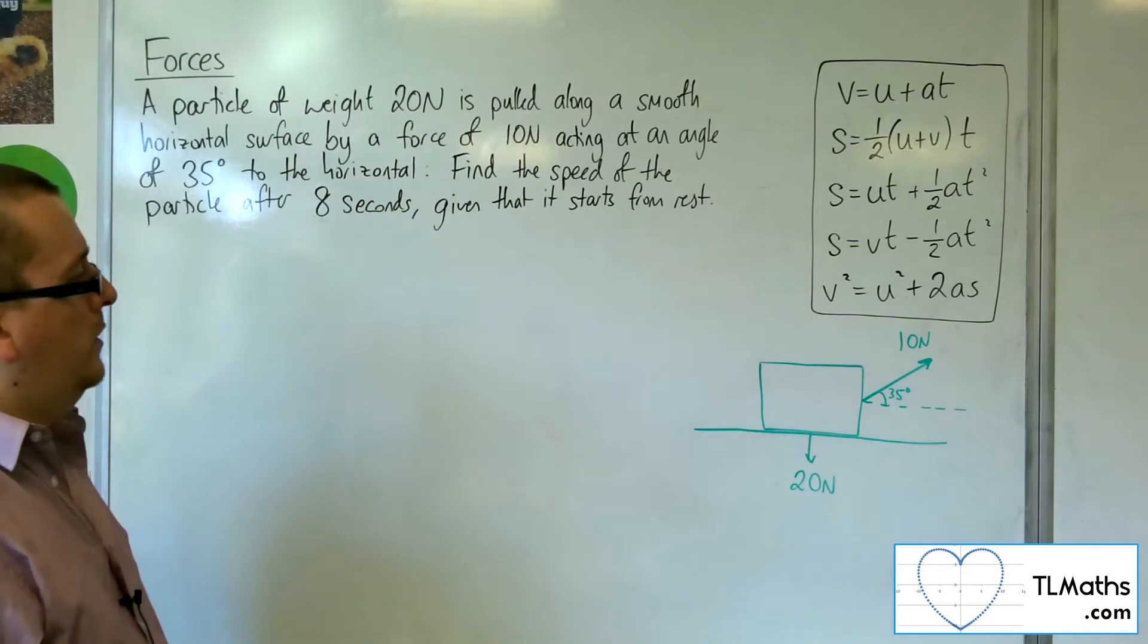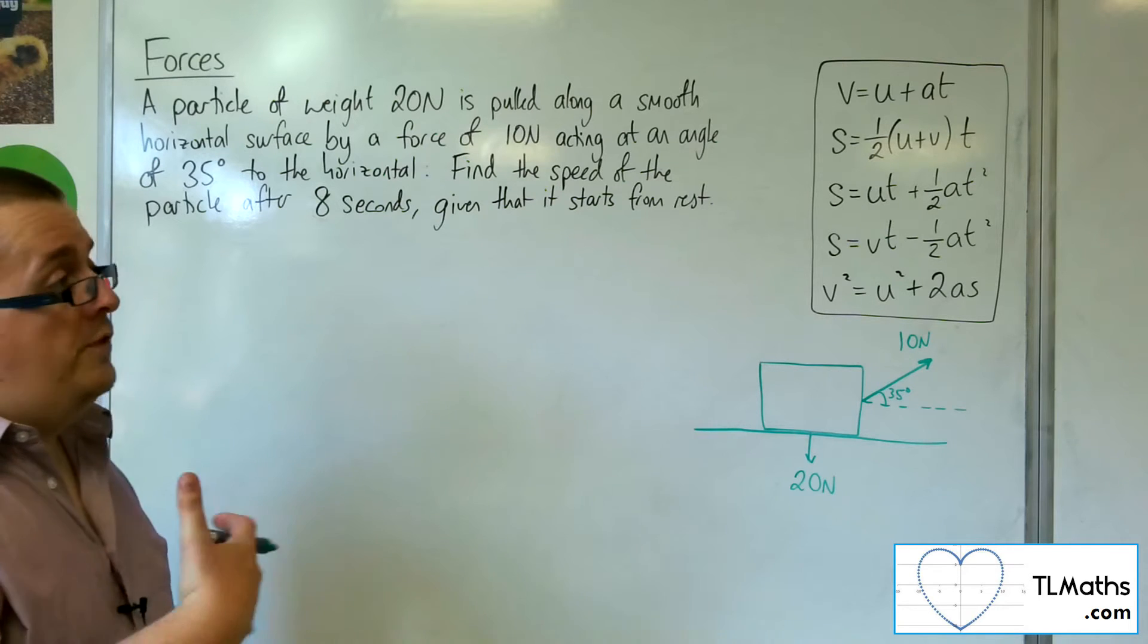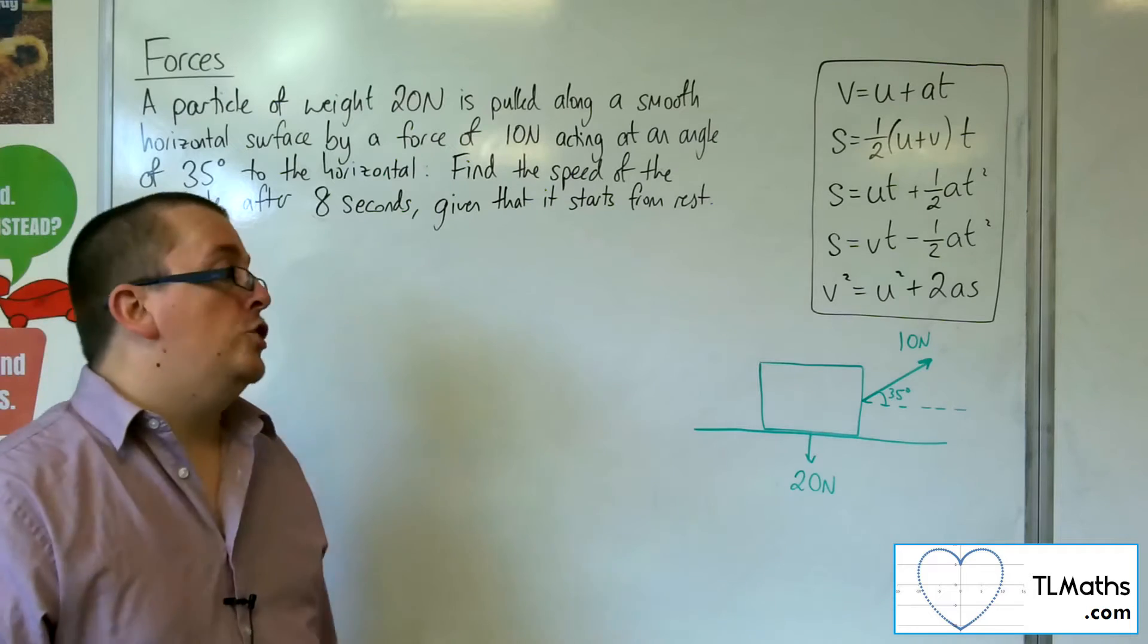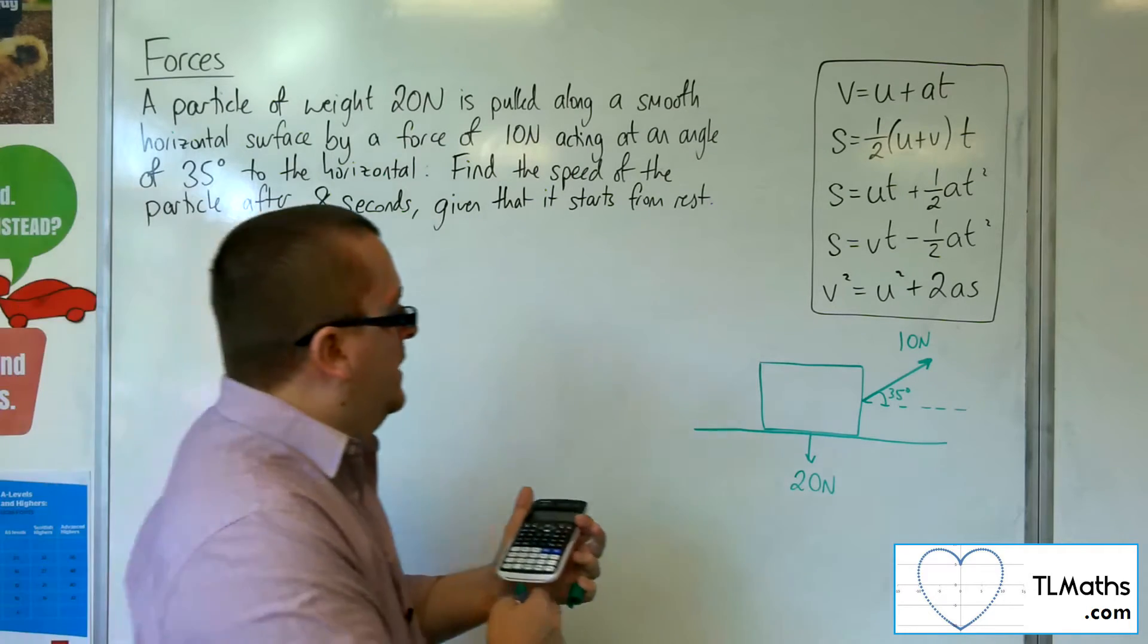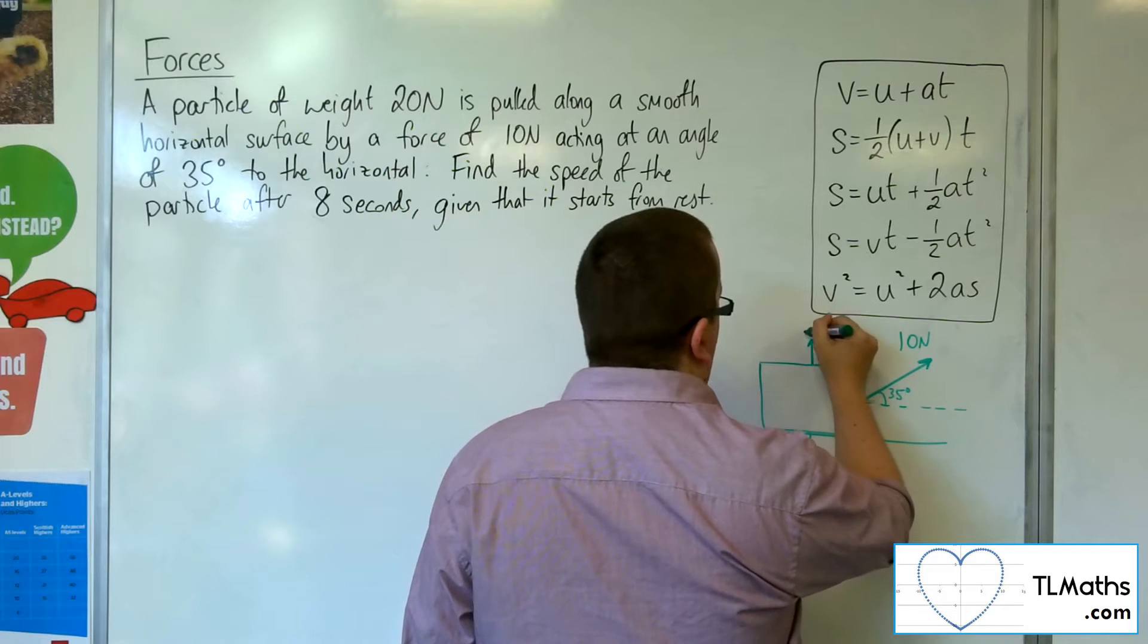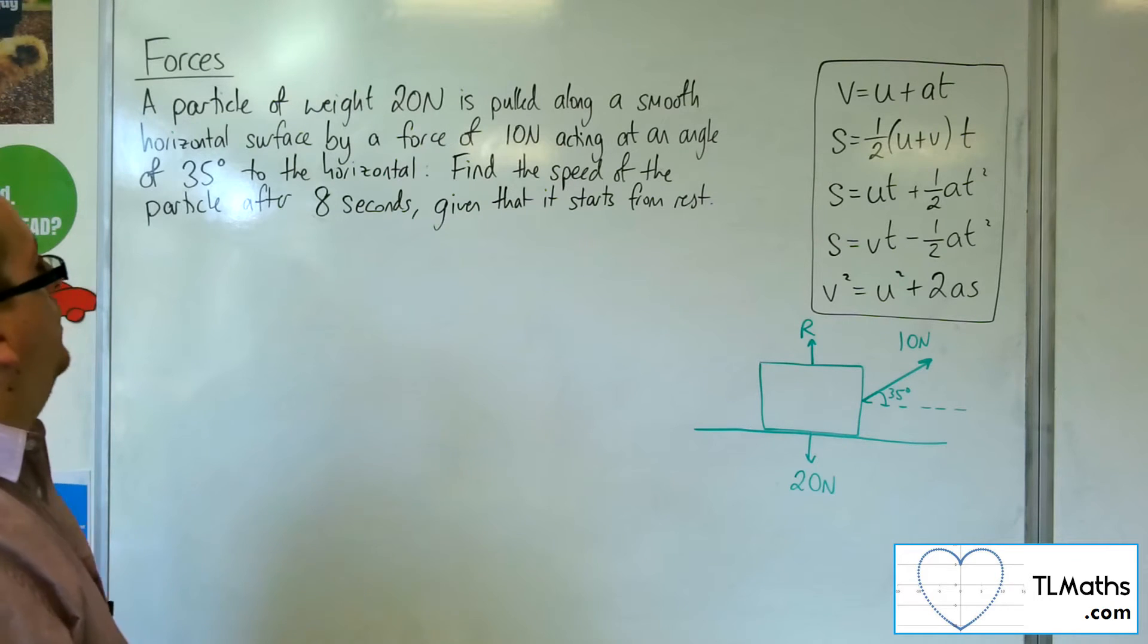Let's add on anything else that we know about. Now we know that the surface is smooth, so there's no friction, so we can ignore that. The only other thing that we need to be aware of is that there is going to be that normal reaction force, R, working directly upwards.